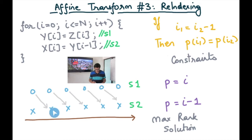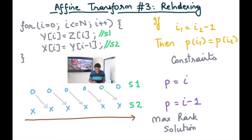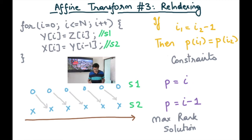So basically this circle and this cross must be allocated to the same processor. Pictorially speaking, this makes sense — all these chains should be present in the same processor. The rank of the solution of the mapping function is basically 1, which is equal to the rank of the iteration space as well. So we have found the maximum rank solution.